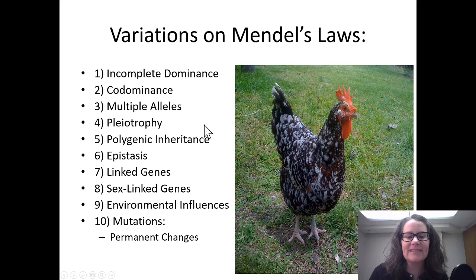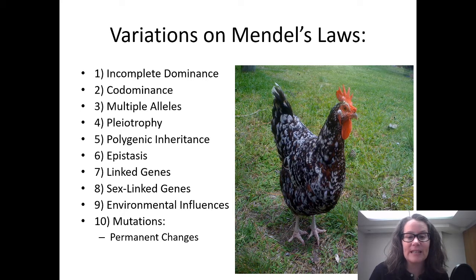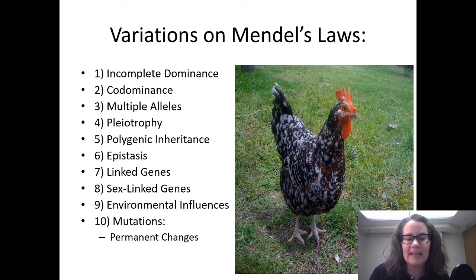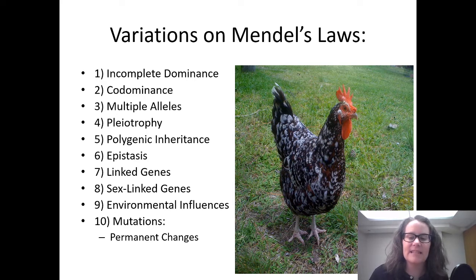There are a lot of different ways that we break Mendel's rules and this is just going to give you a smattering of ideas about how we vary Mendel's laws. I've divided this into two parts. We're going to go through part five — polygenic inheritance — and then part two will cover the last bit of these variations. Let's get started with incomplete dominance.